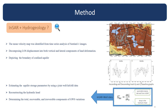Here, we first identify the mean velocity map from time series analysis of Sentinel-1 images and then decompose it into both vertical and lateral components. Moreover, we can determine the spatial boundary of the confined aquifer system. There is a relationship between hydraulic head, aquifer storage properties, and land deformation in confined aquifer systems. So, we can express that the land deformation is directly related to changes in hydraulic head according to these equations.